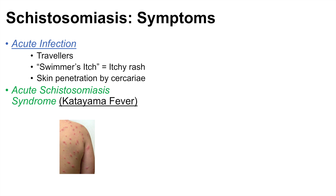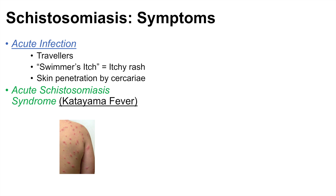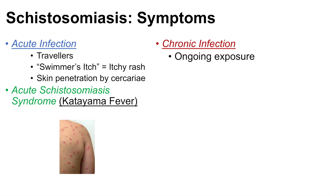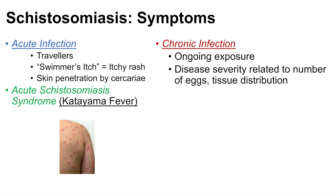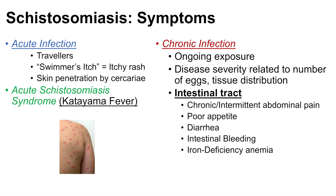During the acute period of infection, we can see a syndrome known as acute schistosomiasis syndrome or Katayama fever. This is due to an immune reaction to the parasites and can lead to a different subset of symptoms. Most of the symptoms discussed in schistosomiasis are due to a chronic infection, which is due to ongoing exposure to the parasites and their produced eggs. Disease severity is related to the number of eggs and the tissue distribution of the parasites and eggs.